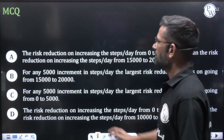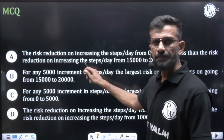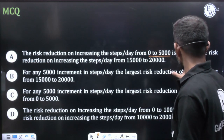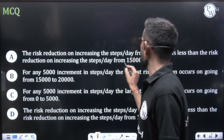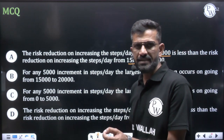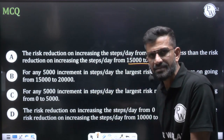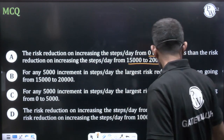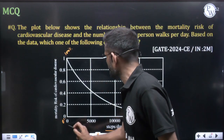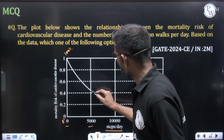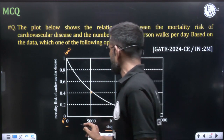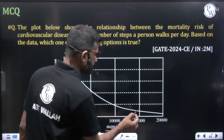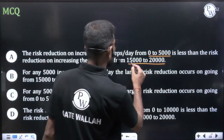Option A states that the risk reduction on increasing steps per day from 0 to 5,000 is less than the risk reduction on increasing steps from 15,000 to 20,000. Let's compare: from 0 to 5,000, the mortality risk goes from 100% down to about 40%, so that's a 60% risk reduction.